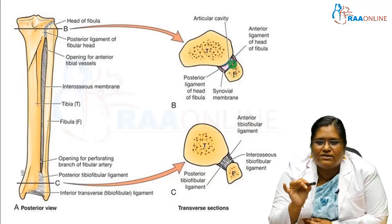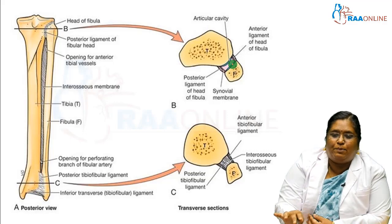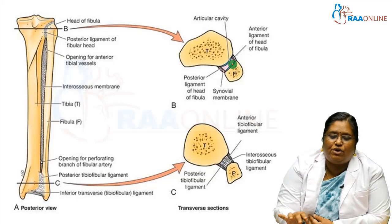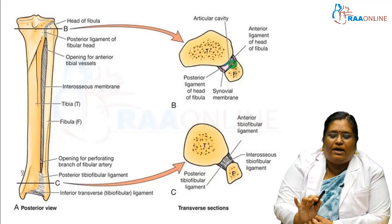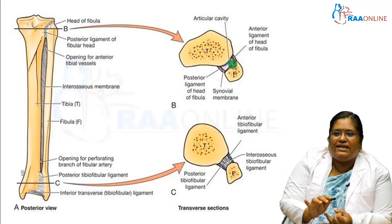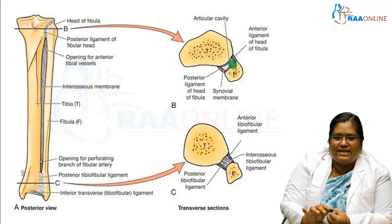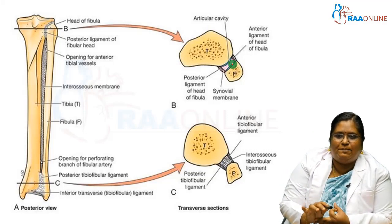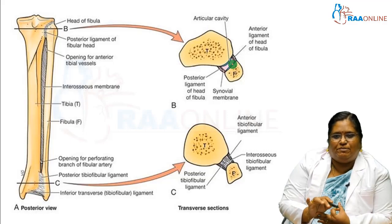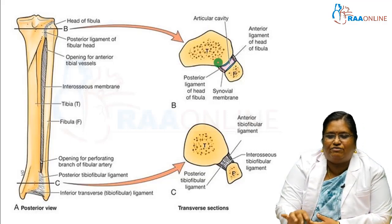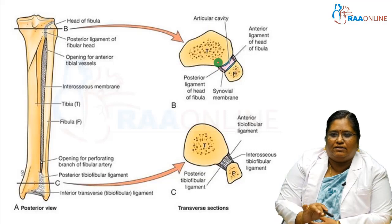There are three ligaments that play an important role in maintaining the stability of the proximal tibiofibular joint: the capsule, the anterior ligament of the tibiofibular joint, and the posterior ligament of the tibiofibular joint.